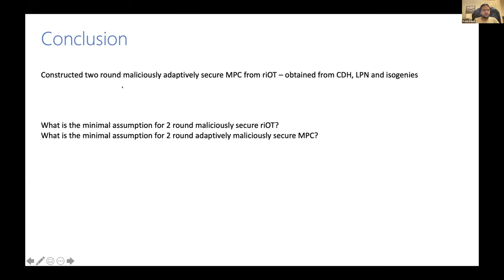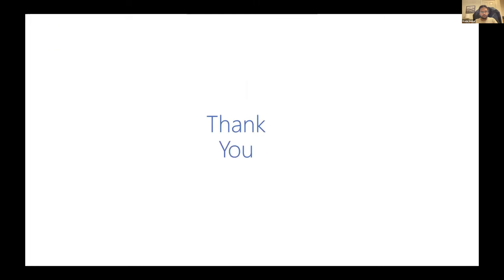Concluding, we construct the first two-round maliciously secure adaptive MPC from RIOT. Two open questions remain: what is the minimal assumption required for the RIOT primitive, and what is the minimal assumption in general required for two-round adaptively secure MPC protocol? Thank you.